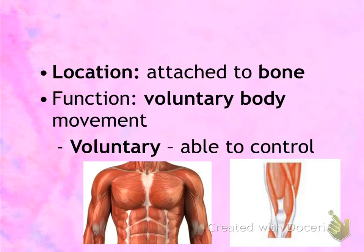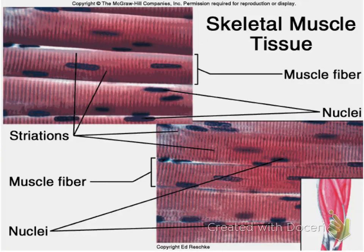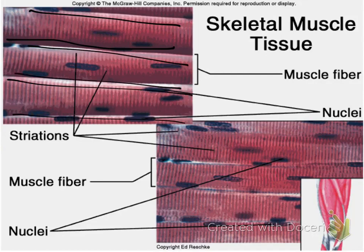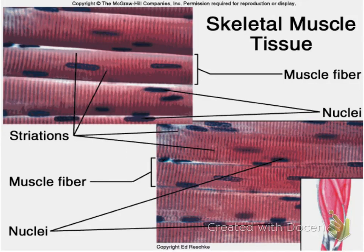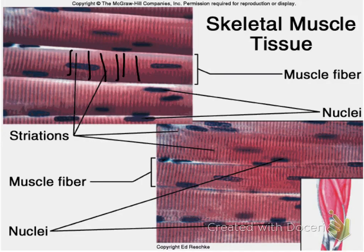Skeletal muscle gets its name from its location — it is attached to the skeleton. The function of skeletal muscle is voluntary body movement, meaning you are actually controlling the muscle. Key features include: cylindrical tube-shaped cells that run parallel to each other, multiple nuclei (multi-nucleated) located toward the outside near the cell membrane, and striations — the dark and light bands.